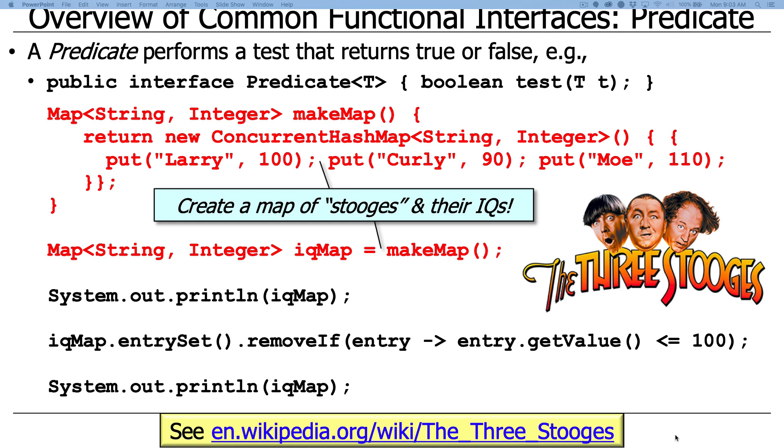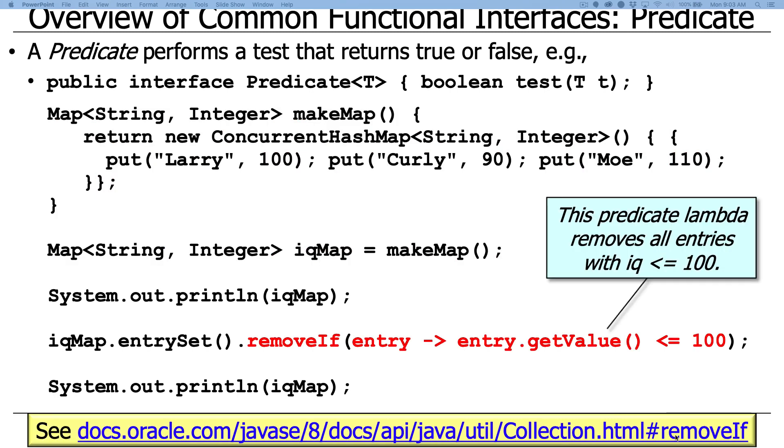So what we're going to do here is we're going to make a map of the Stooges. That's what this little factory method does. And it maps their names to their IQs. And then we're going to do some stuff. We're going to print out the map, and we're going to remove some items, and then we're going to print the map out again.